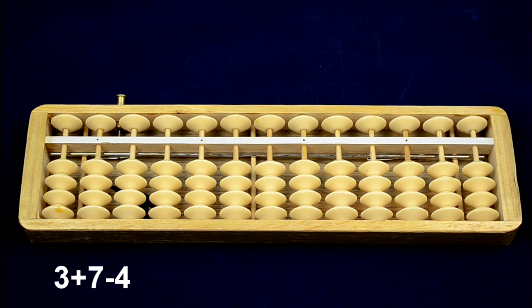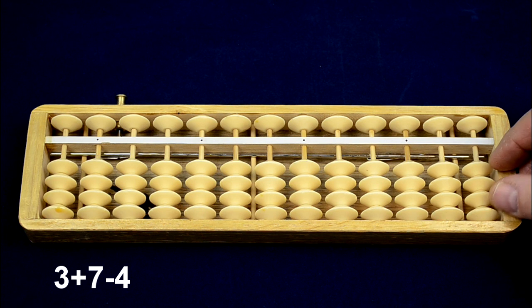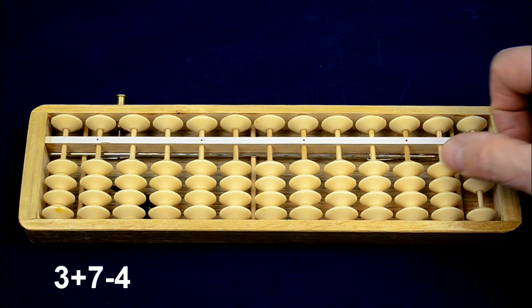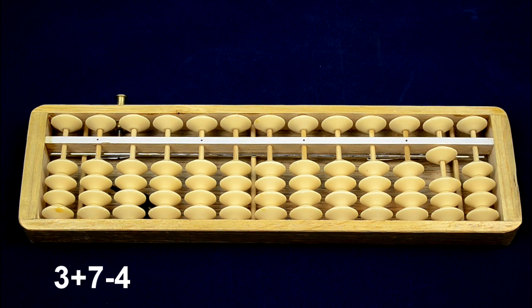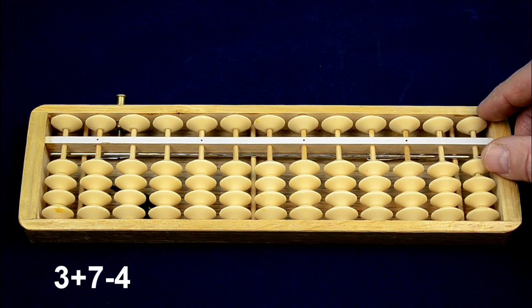So this is how we do 3 plus 7 minus 4. 3 plus 7, put in 10, take away 3. And then minus 4, take away 10 and put in 6.